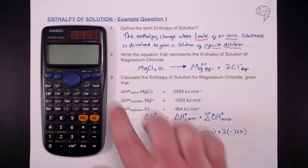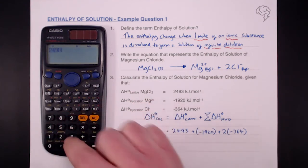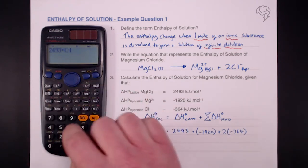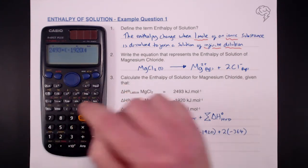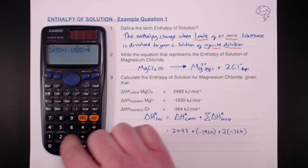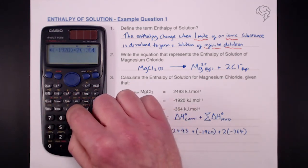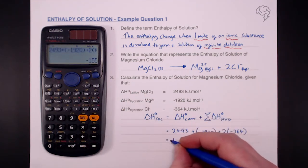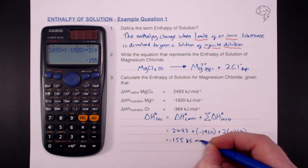Okay, so we'll put that into our calculator. So that is plus 2493 plus minus 1920. Of course, you can just put minus in there if you want, but I'm just doing it without simplifying this. Plus two times minus 364, close brackets, and that equals minus 155 kilojoules per mole.